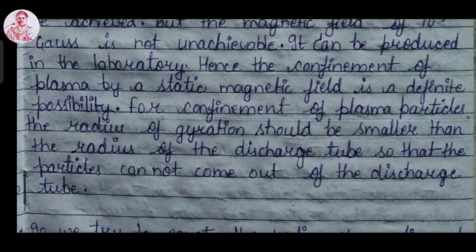For confinement of the plasma particles, the radius of gyration should be smaller than the radius of the discharge tube, so that the particles cannot escape from the discharge tube.